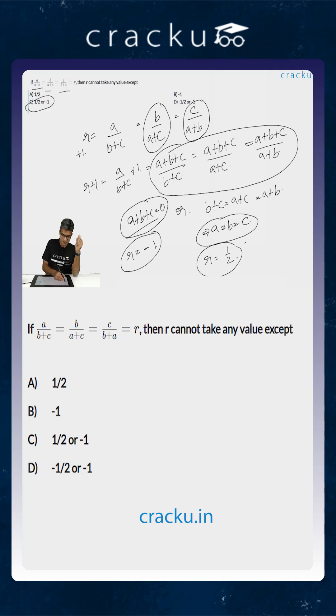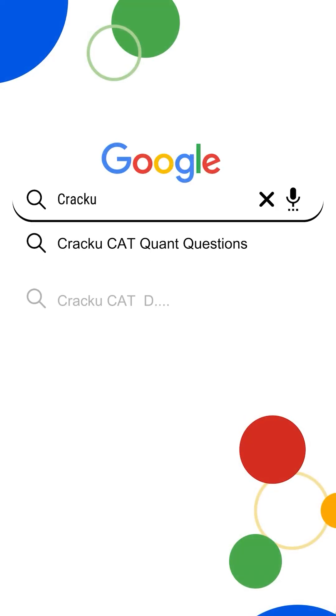So the correct answer is option c. If you want more memory based questions and papers from past year's CAT exam, just go to Google and search Cracku CAT previous papers.